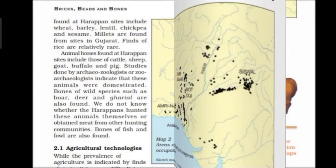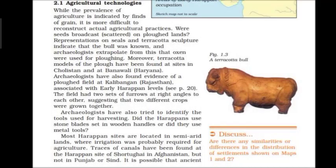Now let us discuss agriculture and technologies. If we have grain evidence, we can understand that agriculture was happening, but the exact agricultural practices are not entirely clear. What we can see are terracotta sculptures of bulls, suggesting that oxen or bulls were used for ploughing. A terracotta model of a plough has been found at the site of Cholistan in Pakistan and at Banawali in Haryana.